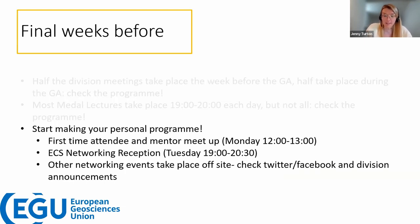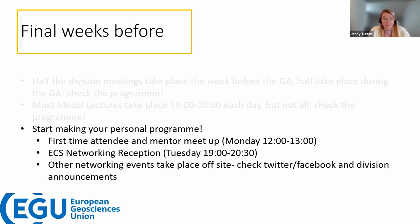We're not having an icebreaker activity like we normally do on the Sunday before the conference, but there is still going to be a first-time attendee and mentor meetup on Monday, 12 to 1. If you've never attended EGU before and are unsure about what sessions to go to, this is a place for you as well. There is also the Early Career Scientist Networking Reception on Tuesday from 7pm till 8:30pm — one of the only networking receptions taking place inside the Vienna Centre. Individual divisions will also have social events, mostly off-site, communicated via Twitter, Facebook, emails, or listservs.